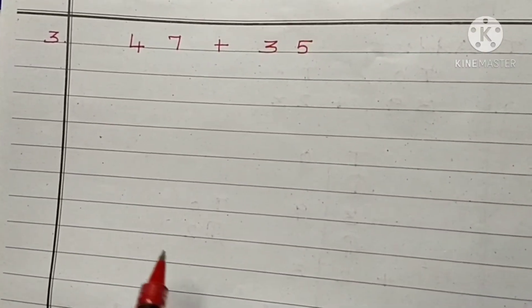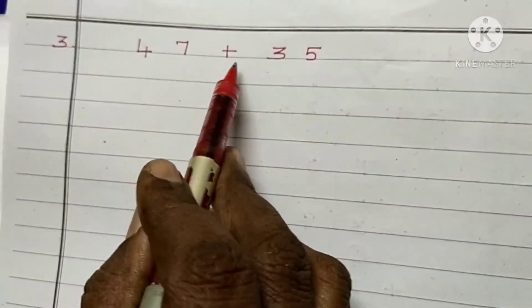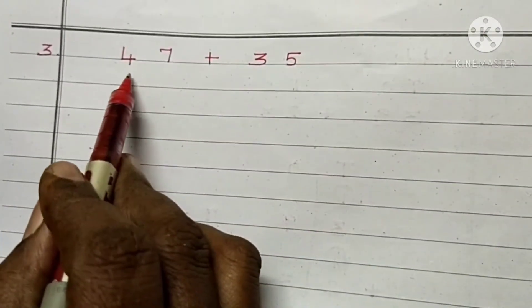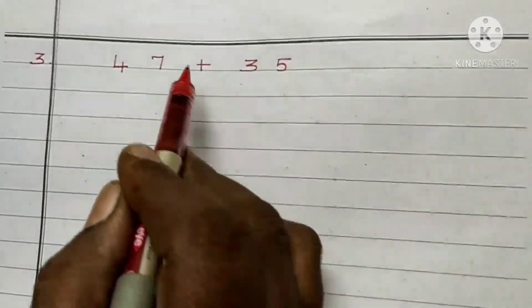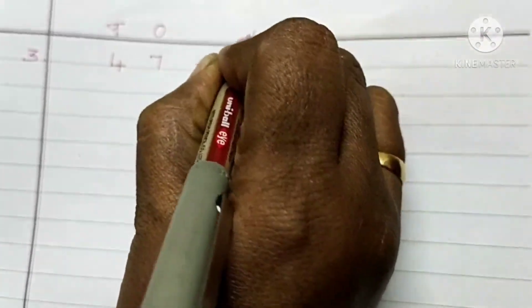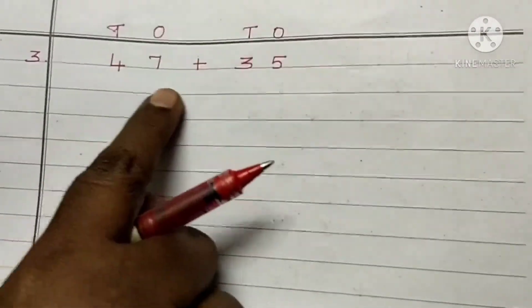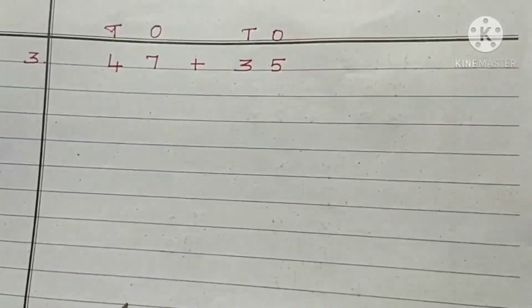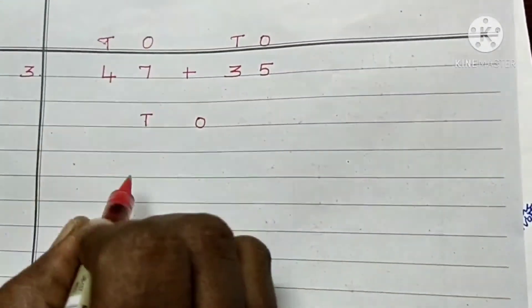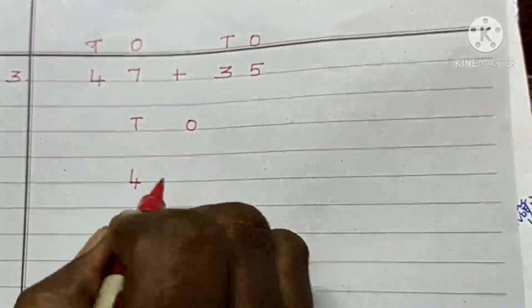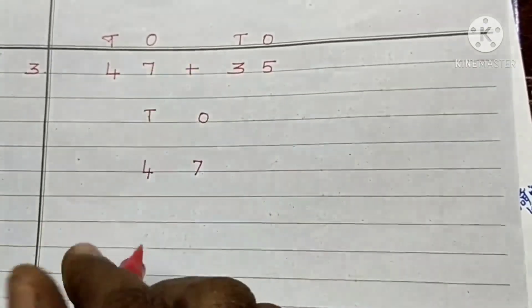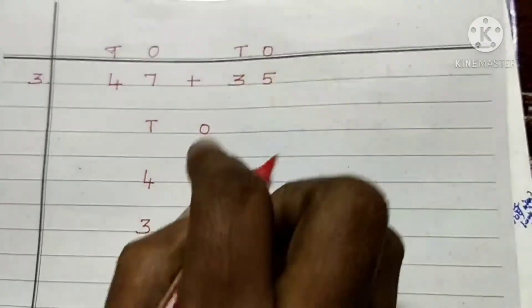Go to the third example: 47 plus 35. First put the place value for the given numbers. 1's, 10's. Arrange the numbers according to their place values. How many 10's are there? 4 tens. How many 1's are there? 7 ones. 3 tens and 5 ones.